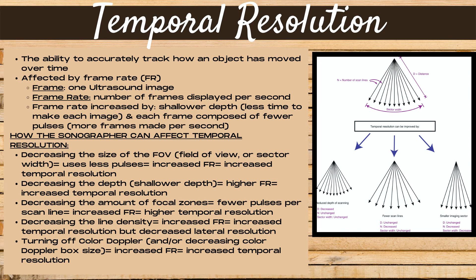Decreasing depth results in a higher frame rate and increased temporal resolution. Decreasing the number of focal zones means fewer pulses per scan line, which increases frame rate and results in higher temporal resolution. Decreasing the line density also increases frame rate and temporal resolution, though note this also decreases lateral resolution. Turning off color Doppler or decreasing the color Doppler box size also results in increased frame rate and increased temporal resolution.